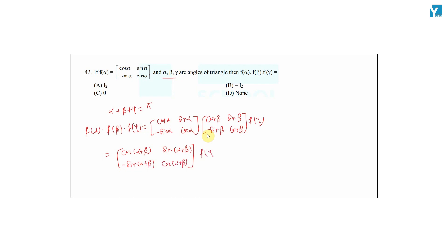Now we have the product of f(α) · f(β) as [cos(α+β), sin(α+β); -sin(α+β), cos(α+β)]. We can replace α + β with π - γ, since α + β + γ = 180°. So cos(π - γ) = -cos γ, and sin(π - γ) = sin γ. Therefore this becomes [-cos γ, sin γ; -(-cos γ)] — that is, -cos γ in the appropriate positions.